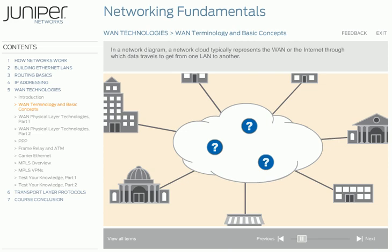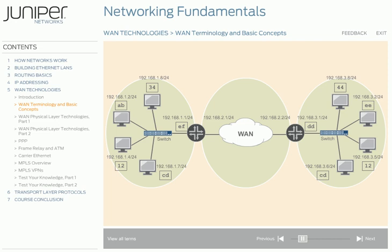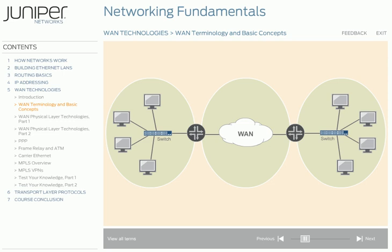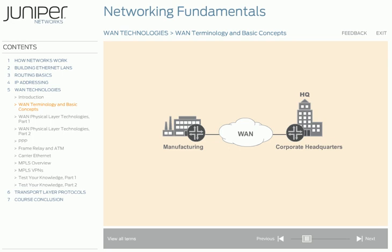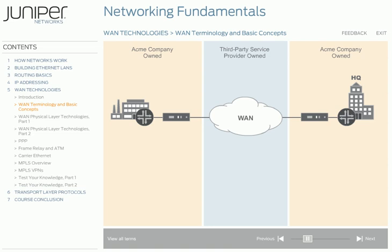Consider the network diagram shown on screen. In earlier sections, we discussed the LAN connectivity, the IP addressing scheme in use, and how data flowed between different LANs. We won't focus on the detail of LANs anymore in this section, so we'll simplify our graphic. When we last saw them, Acme was getting the network at its manufacturing facility up and running. Once the LAN at the new facility was working, Acme wanted to connect it to the LAN at its corporate headquarters. To accomplish this goal, the company installed a WAN link to interconnect the LANs at each location. Before we delve into the details of Acme Company's WAN, let's first discuss some of the equipment and terminology used in a WAN environment.